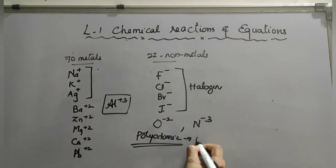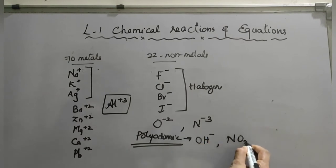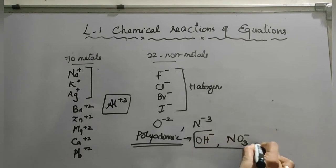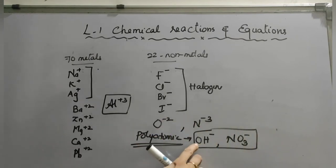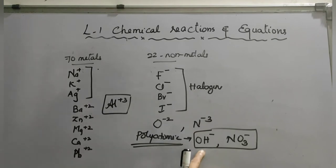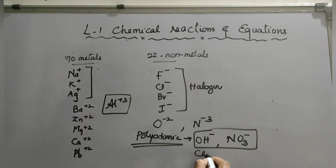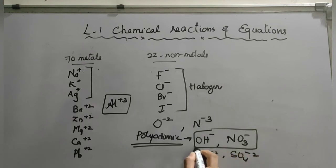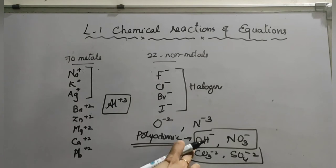For minus one polyatomic ions: hydroxide (OH⁻) and nitrate (NO₃⁻). For minus two: carbonate (CO₃²⁻) and sulfate (SO₄²⁻). So the four polyatomic ions you must remember are hydroxide ion, nitrate ion, carbonate ion, and sulfate ion.